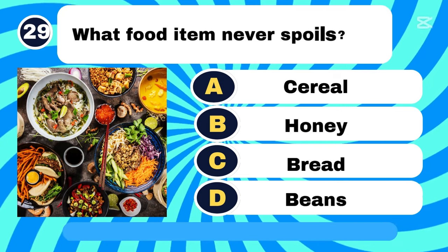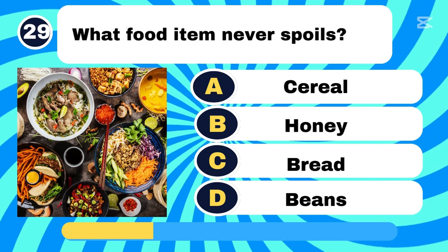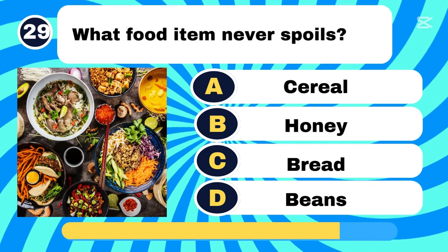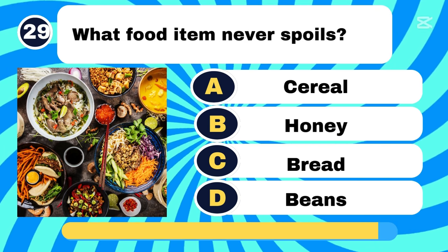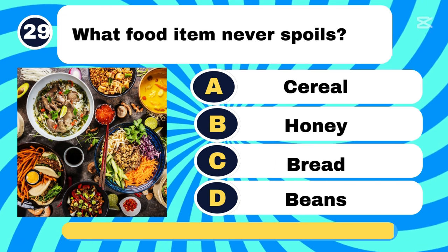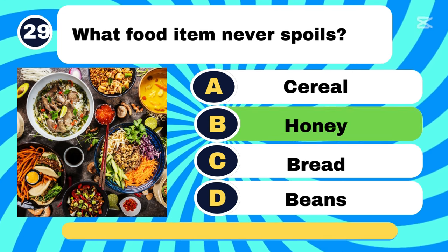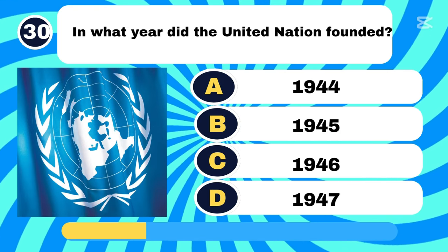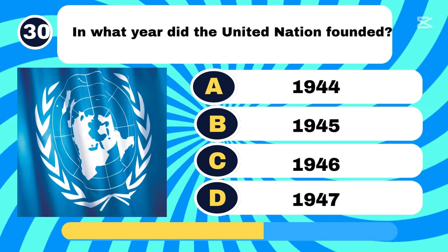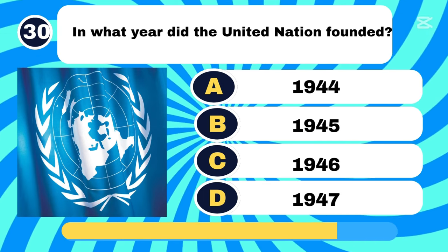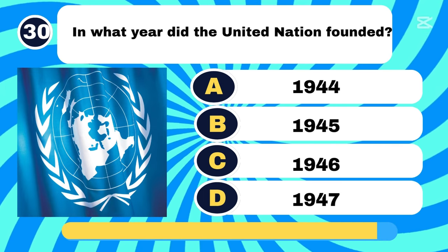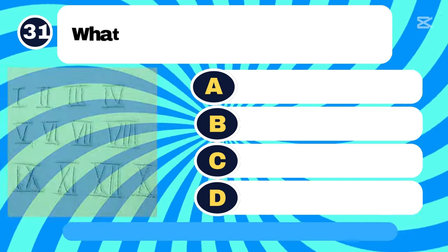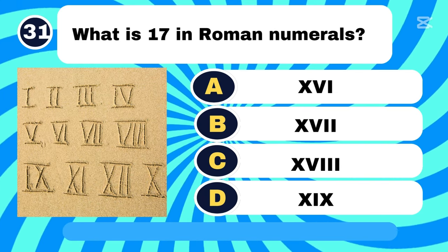What food item never spoils? Letter B, Honey. In what year was the United Nations founded? Letter B, 1945. What is 17 in Roman numerals?